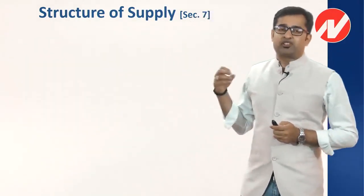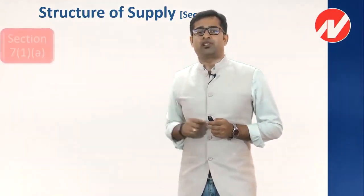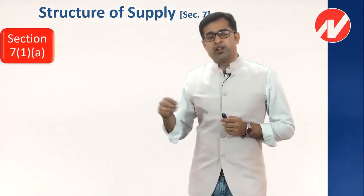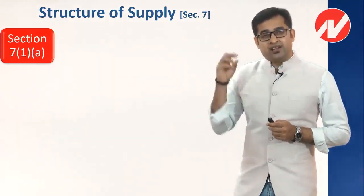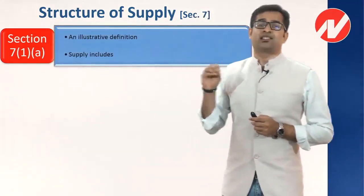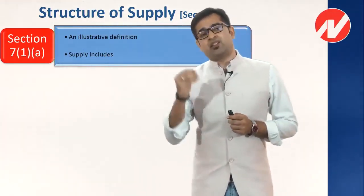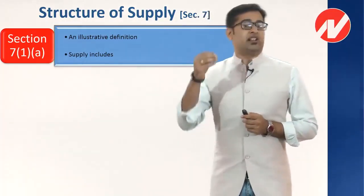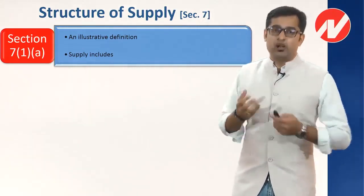Section 7 is the main section where supply is defined, and it has certain subsections. Section 7(1)(a) gives the basic understanding of the term supply — it is an illustrative definition. When we go into the definition, it says 'supply includes following supplies,' meaning it is an inclusive definition, not a full and final exhaustive definition.